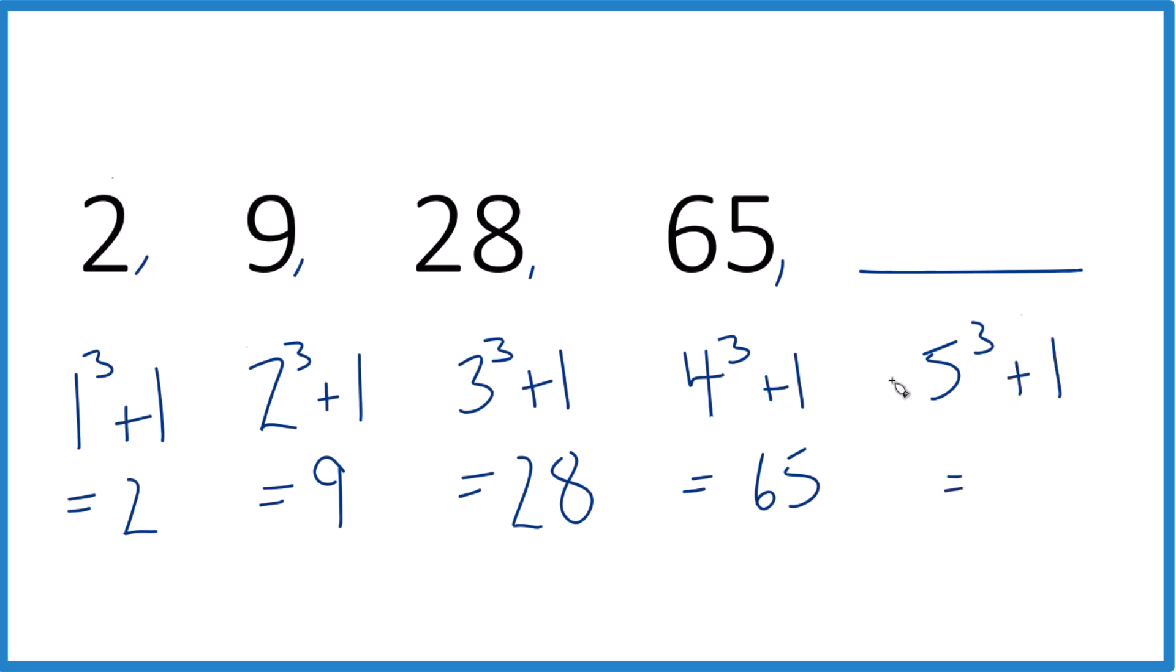5 times 5 is 25. 25 times 5 is 125, plus 1, so 126. We'd expect this next number to be 126 if it follows this pattern. And this does seem like it's the pattern. It's a really good match.